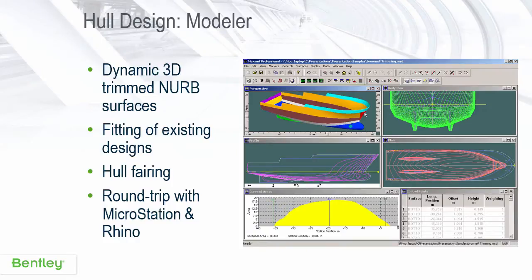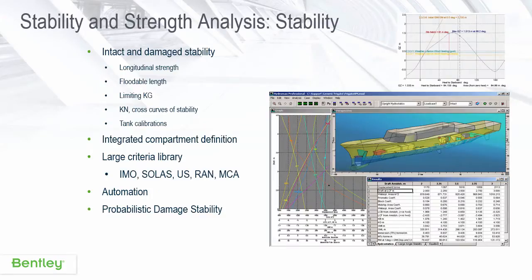Hull model lets you use any number of dynamically trimmed NURB surfaces to create new designs or fit existing designs. It has particularly good capabilities around hull fairing, and it has round-trip capability with MicroStation and Rhino.